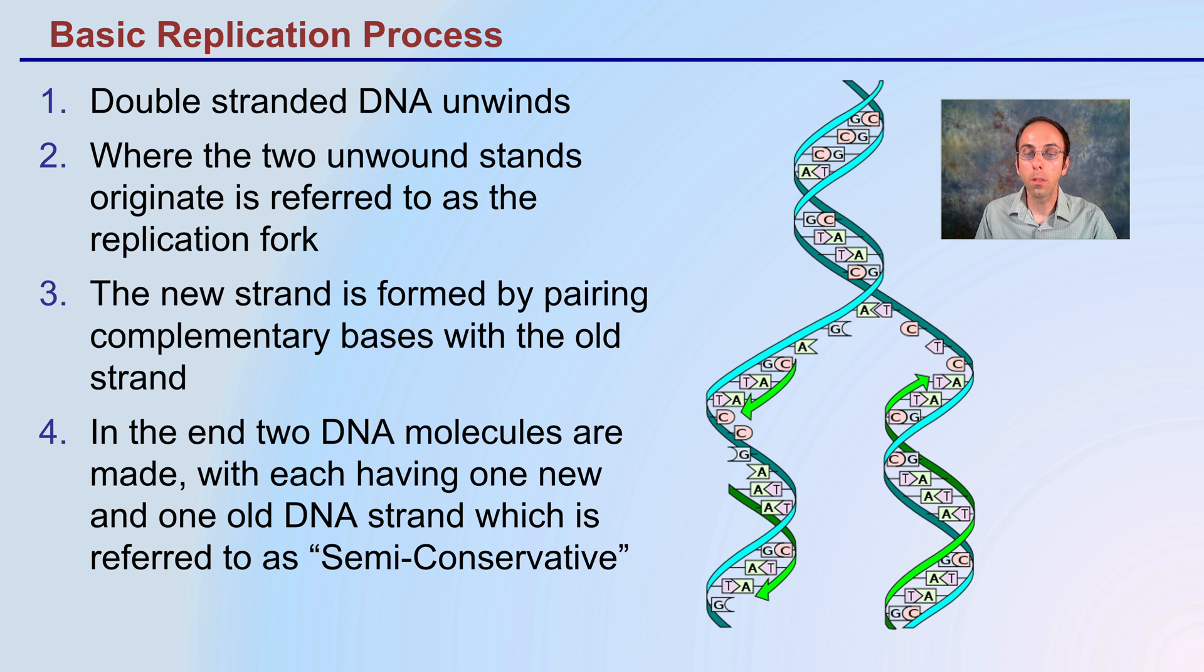In the end, two molecules of DNA, we see at the end here, are made with each having one old strand and one new strand and this process is known as semi-conservative replication.